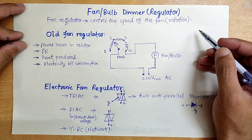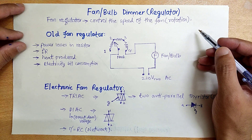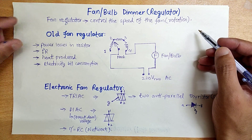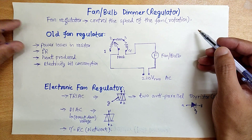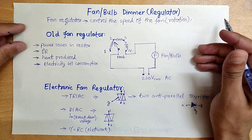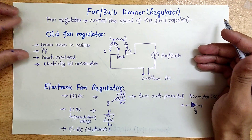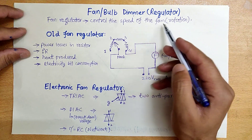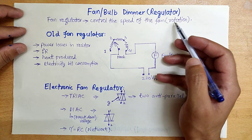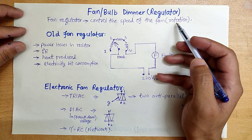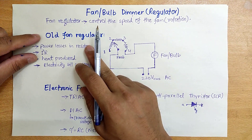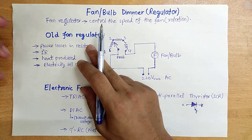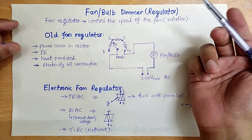In today's video tutorial, I will discuss about fan or bulb dimmer regulators. A fan regulator is a device or a circuit that controls the speed of the fan, or we can say it controls the rotation of the fan. First, I will discuss about the old-fashioned fan regulators.